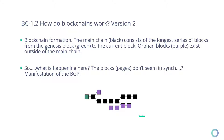All of a sudden, because it's a mining race, we have two similar blocks — in this example, represented by a purple block and a black block. So what do we need to do now? This is an expression of the Byzantine general problem — all of a sudden we have two truths, but we need to make a decision.